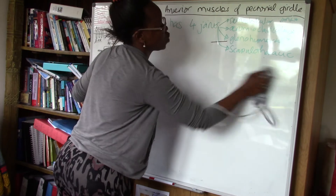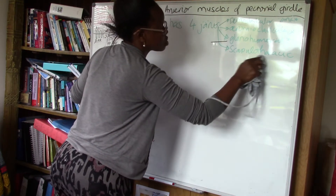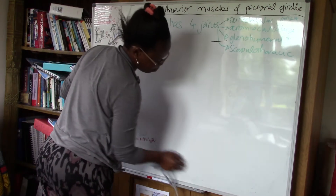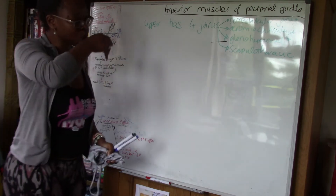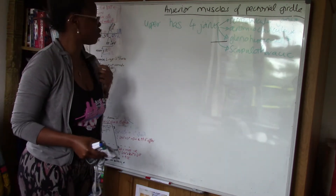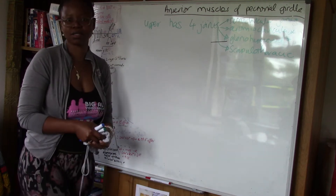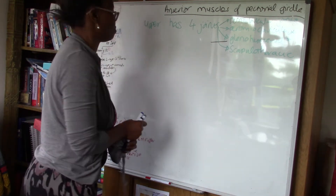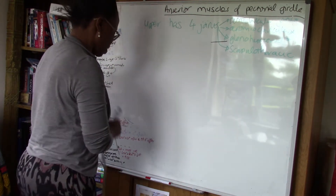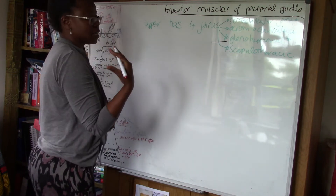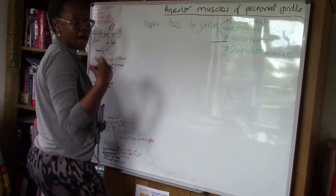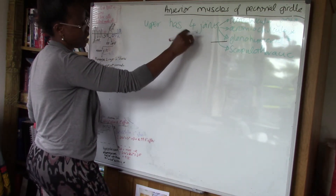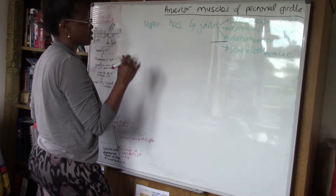Now we know that the glenohumeral joint is a ball and socket joint and also a synovial joint, meaning it contains synovial fluid. I'm now going to move on to discussing the muscles — one of the main topics today — found at the anterior aspect of the upper limb, focusing on the pectoral girdle itself.